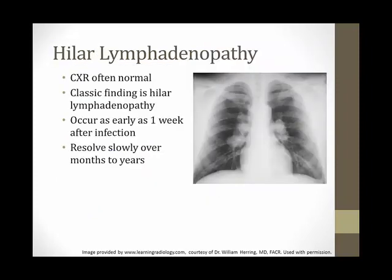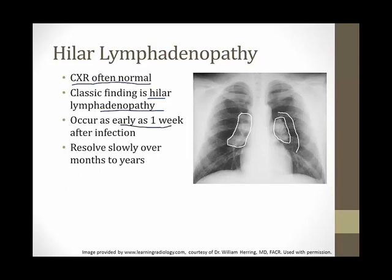Regarding chest X-ray in tuberculosis: it's often normal, but a classic high-yield finding is hilar lymphadenopathy. On X-ray, the hilar lymph nodes appear enlarged and white. The hilum is where the bronchi enter the lungs. Hilar lymphadenopathy occurs in both tuberculosis and sarcoidosis — classic for both. It can appear as early as one week after infection and usually resolves slowly over months to years after treatment.